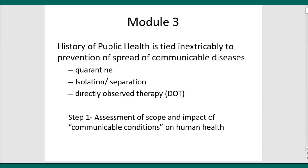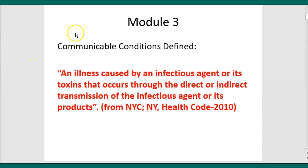Governments battle communicable disease primarily through the powers of social distancing, which involve quarantine, isolation or separation, and direct observed therapy. Step one in the process is to assess the scope and the impact of communicable conditions on human health. Communicable conditions are defined, according to the New York Health Code 2010, as an illness caused by an infectious agent or its toxins that occurs through the direct or indirect transmission of the infectious agent or its products.